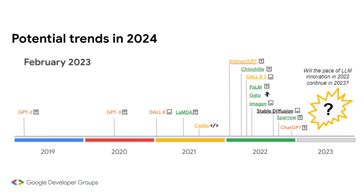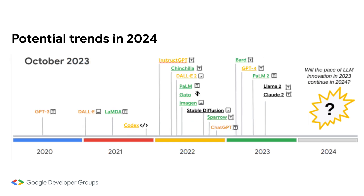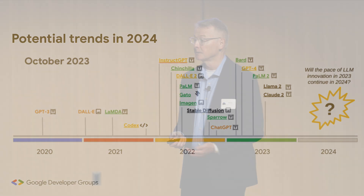Here's where things looked in February 2023, which goes a little further than the chart I showed earlier. I asked whether the pace of innovation from 2022 would continue into 2023, and the answer is absolutely — if anything, things have sped up. The question now is whether that pace will continue into 2024, and if I get a chance to come back to this stage next year, I think I'll be able to say yes, absolutely. It's an exciting area with lots happening.